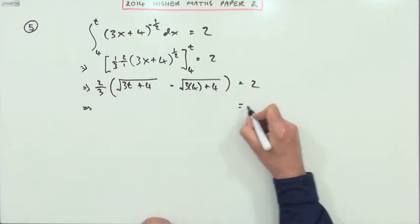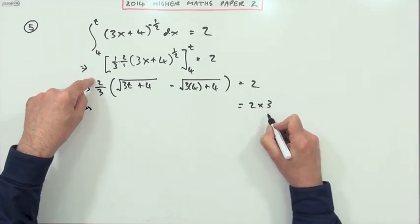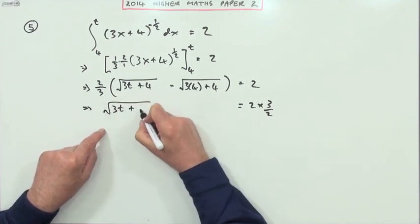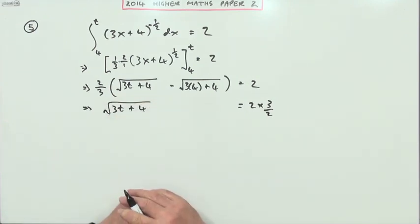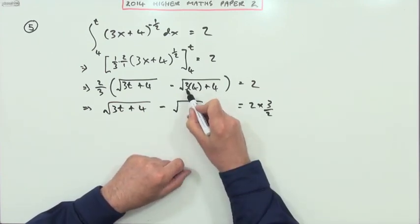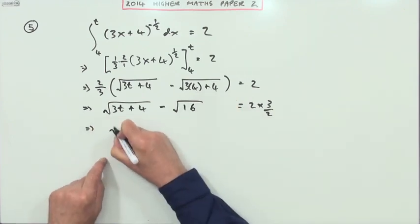I've still got the square root of 3t plus 4, but this part I can work out because that's going to be the square root of 3 times 4, or 12 plus 4 is 16. So now I'm down to this: it's looking a bit better now because that's just 4 and that's just 3.